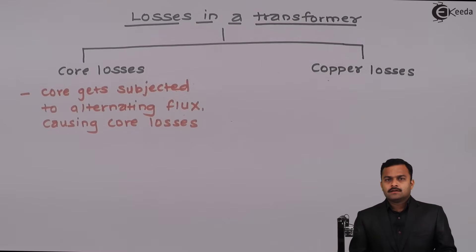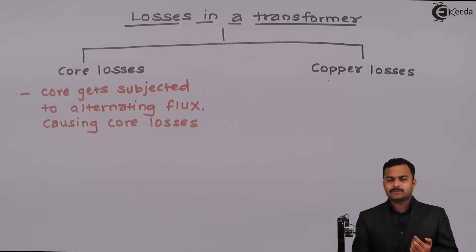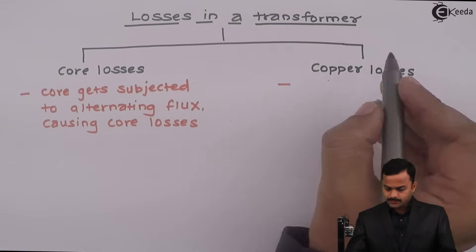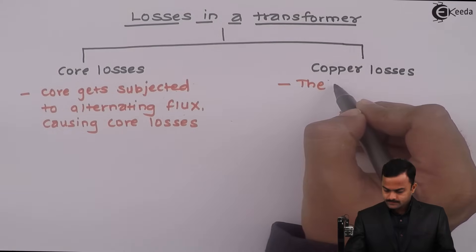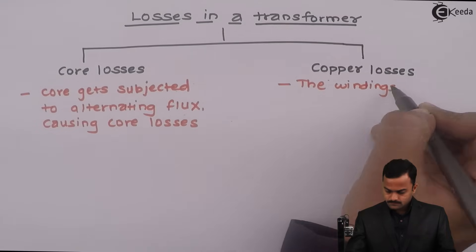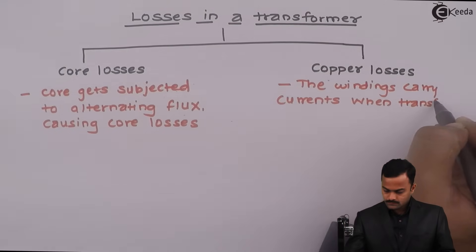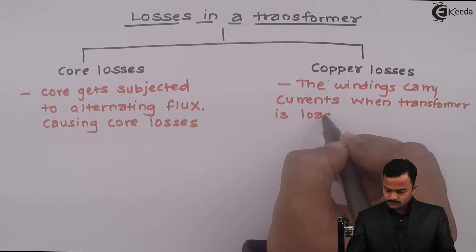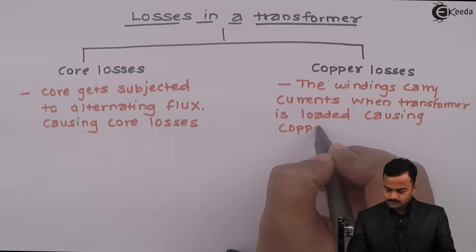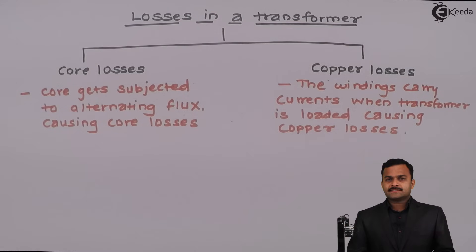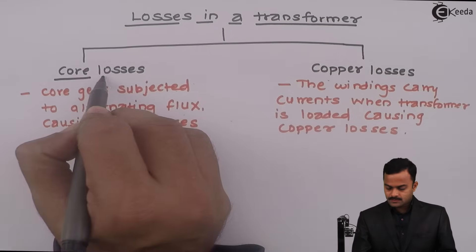Copper losses: the only element that will carry current in a transformer is the winding. Windings carry current on the primary side as well as the secondary side, giving rise to I-squared-R losses. Those losses are called copper losses. Copper losses are because of current flowing through the windings when the transformer is loaded.